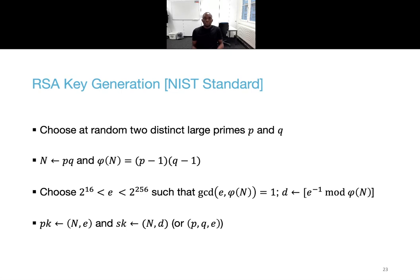But it does not apply to factoring based keys, which are still what you use in practice. So the goal is now to construct an efficient protocol for RSA keys. The NIST standard for RSA key generation is first choose at random two distinct large primes P and Q. Compute N as PQ and Phi of N. Then choose E larger than 2 to the 16 that is coprime to Phi of N. And then compute D as the inverse of E modulo Phi of N. Set then the public key as N, E and the secret key as the factorization of N.